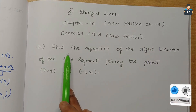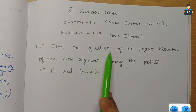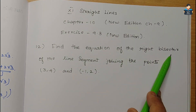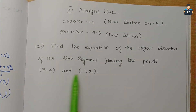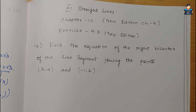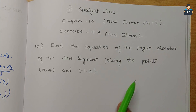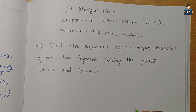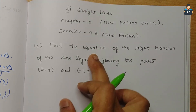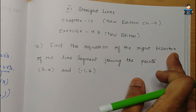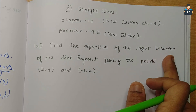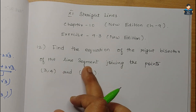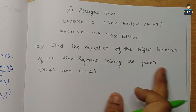So, Question 12: Find the equation of the right bisector of the line segment joining the points (3, 4) and (-1, 2). We need to find the equation of the right bisector, that is the perpendicular bisector, of the line segment joining those points.